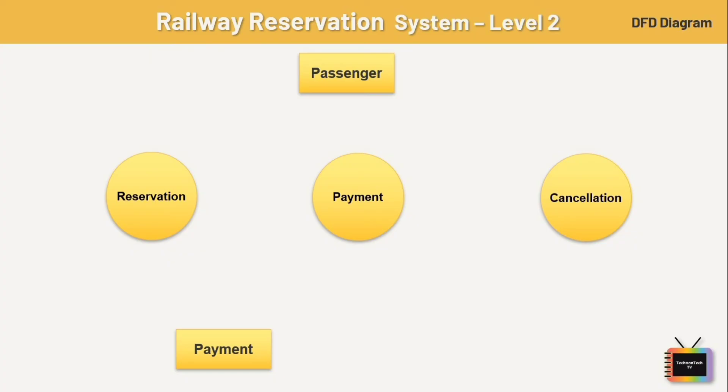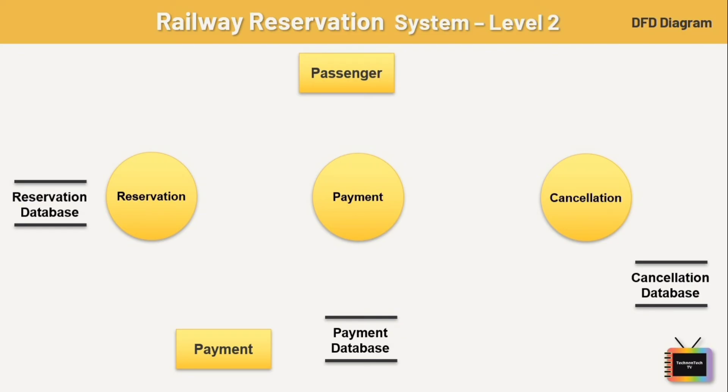We have three databases: reservation database to store details of reservations including passenger information, train details, and seat numbers; cancellation database to store details of cancelled reservations for refund processing and reporting purposes; and payment database to store payment details for reservations.